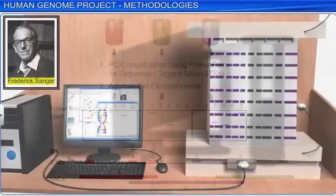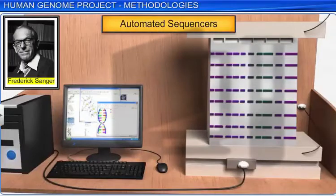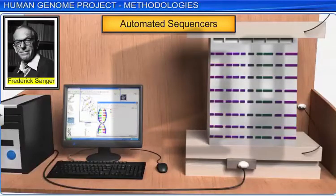Sequencing was then done by automated sequencers that worked on a principle developed by Frederick Sanger, who was also responsible for developing a method to sequence proteins and amino acids.